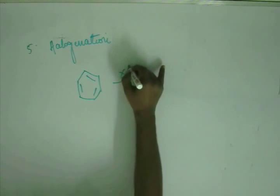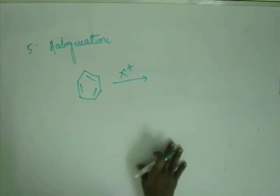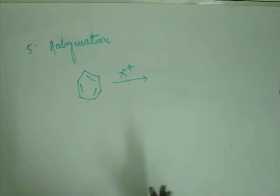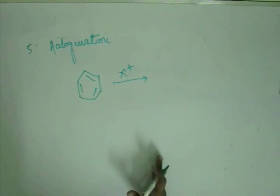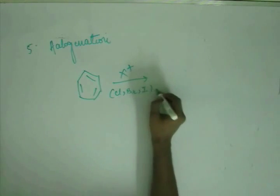You will have a halonium ion, X plus. This X plus can be Cl plus, Br plus, I plus. We don't take F plus because fluorine is the most electronegative element in the periodic table and plus charge on fluorine is not stable. So generally, fluorination is not done through this mechanism. We have other methods to add fluorine on the benzene ring. But this will be only for chlorine, bromine and iodine.